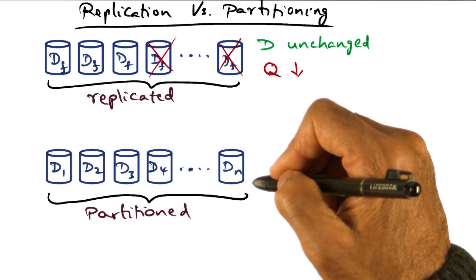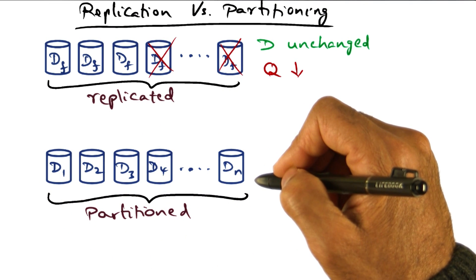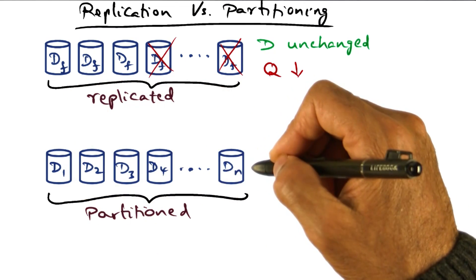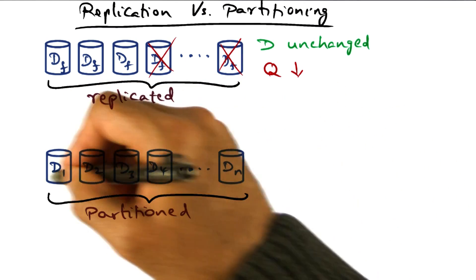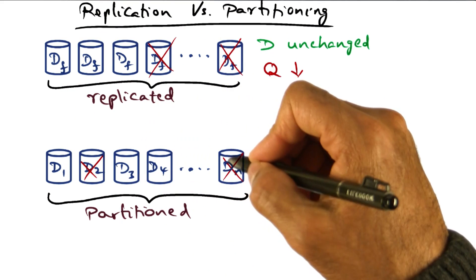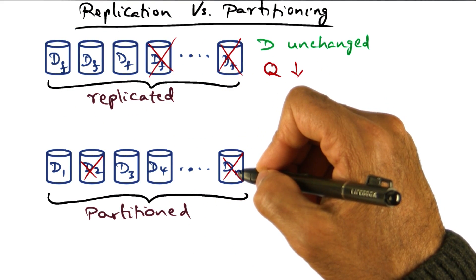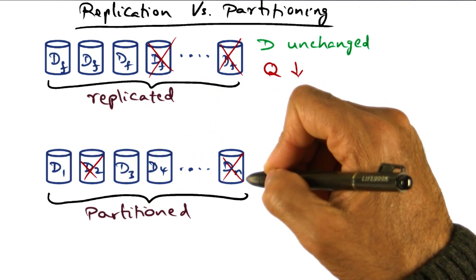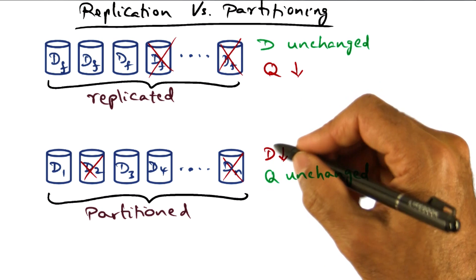The other alternative for architecting the internal data repository of a server is to partition the data. If you partition the data, and let's say there are n partitions of the full corpus of data, and some of the servers fail, then some portion of the full corpus of data becomes unavailable.